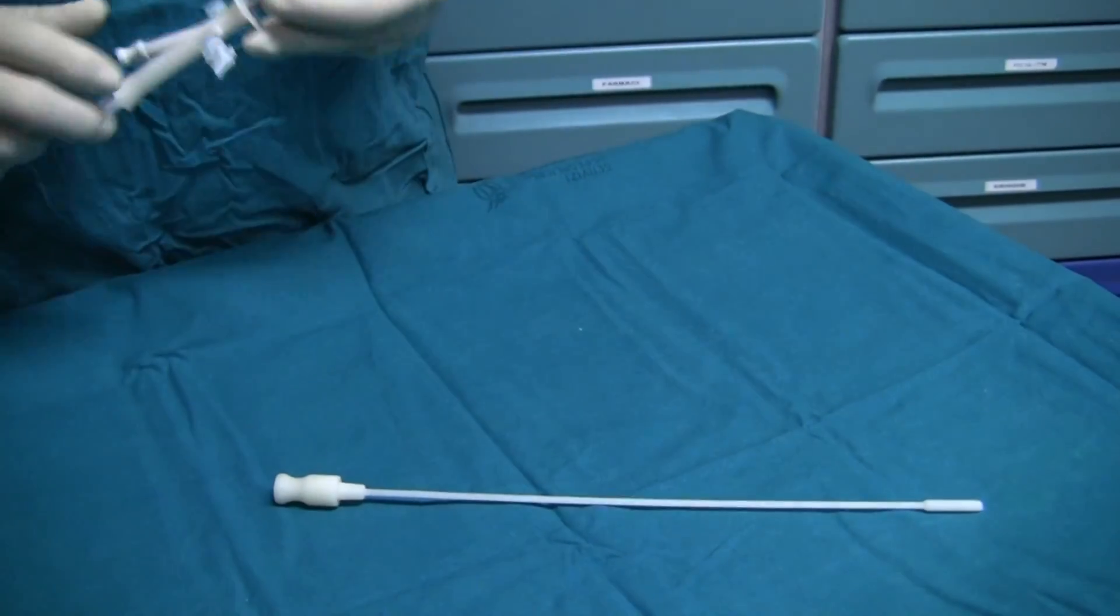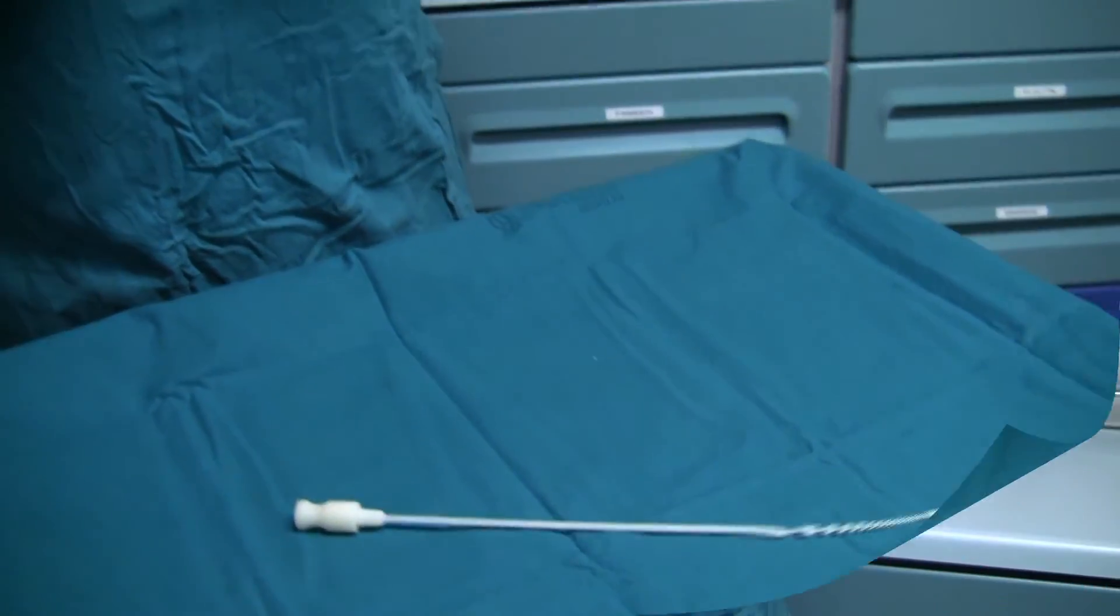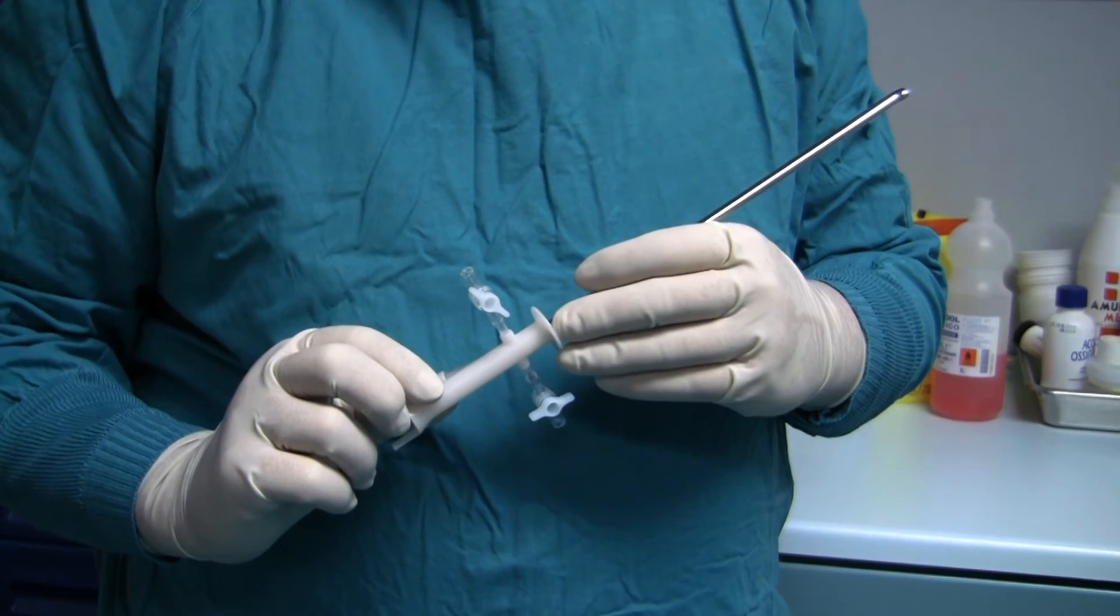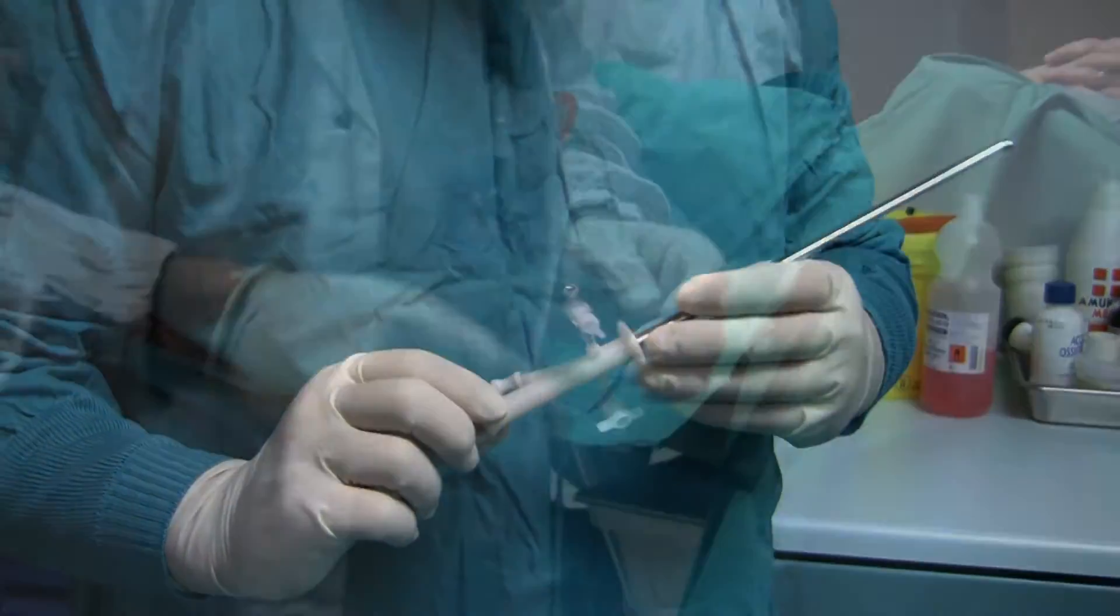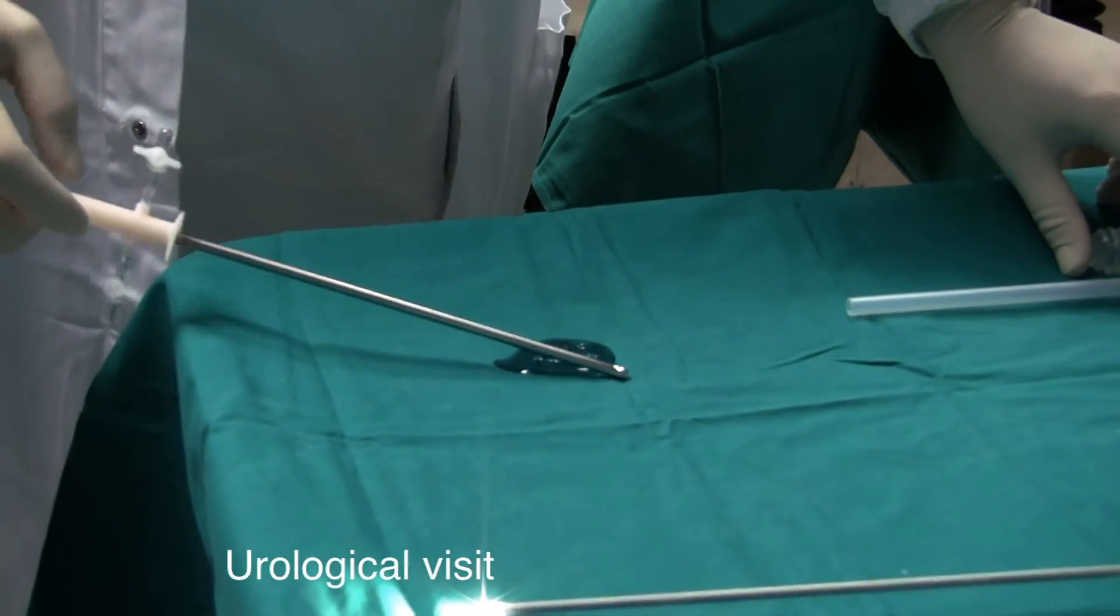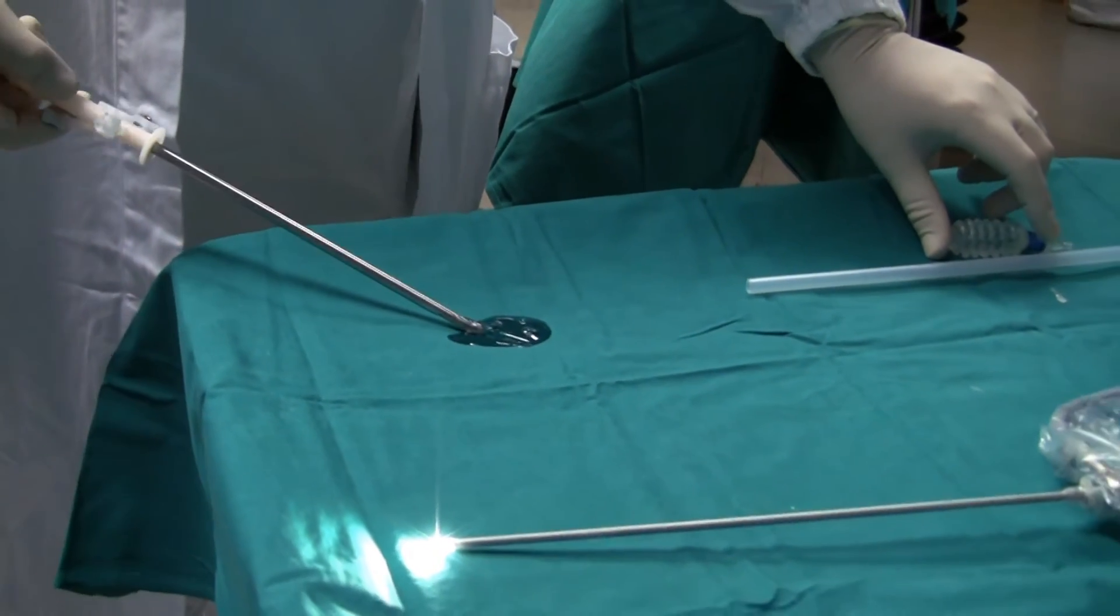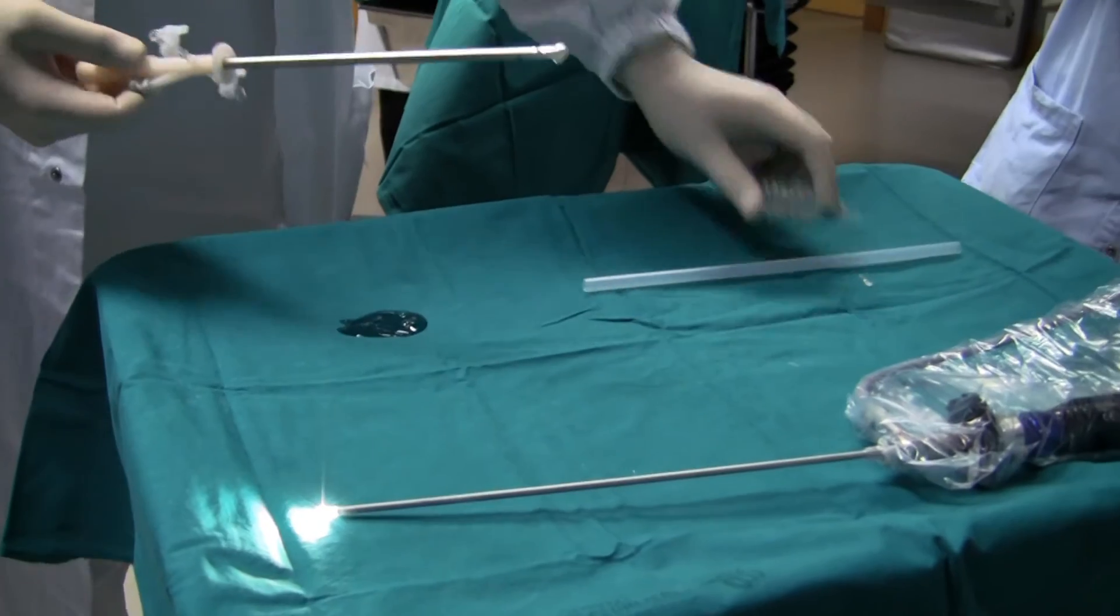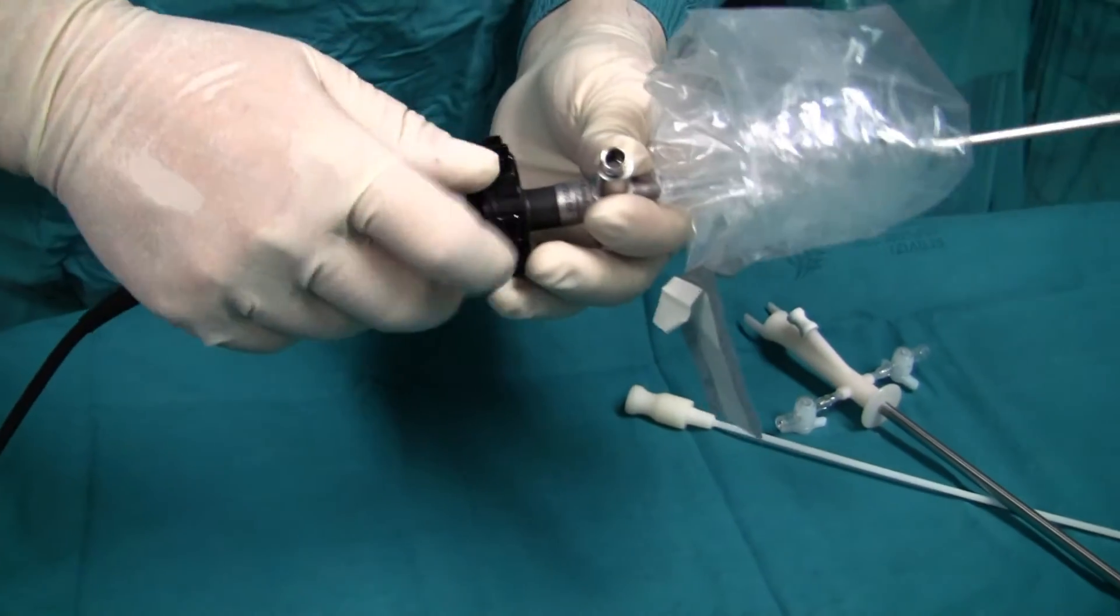Preparation and verification of the disposable outer steel sheath components. Verify that the standard obturator is correctly inserted inside the outer steel sheath and that spigots are in the closing position.